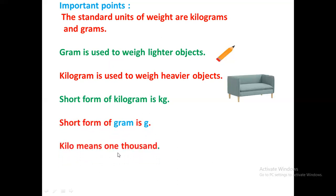Kilo means 1000. You are already familiar with this term. One kilogram is equals to 1000 grams. That means 1000 grams make one kilogram, or you can say there are 1000 grams in one kilogram.